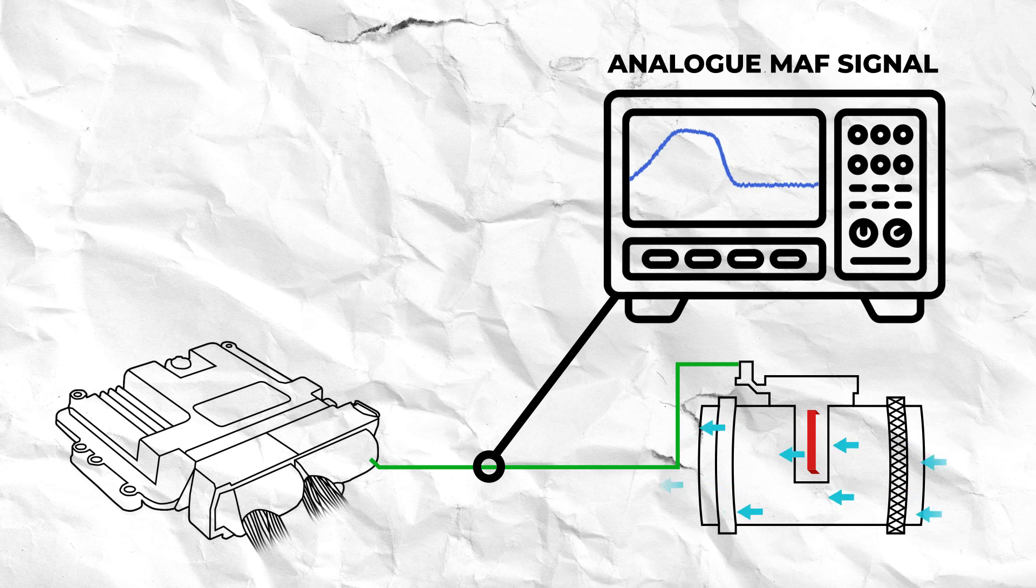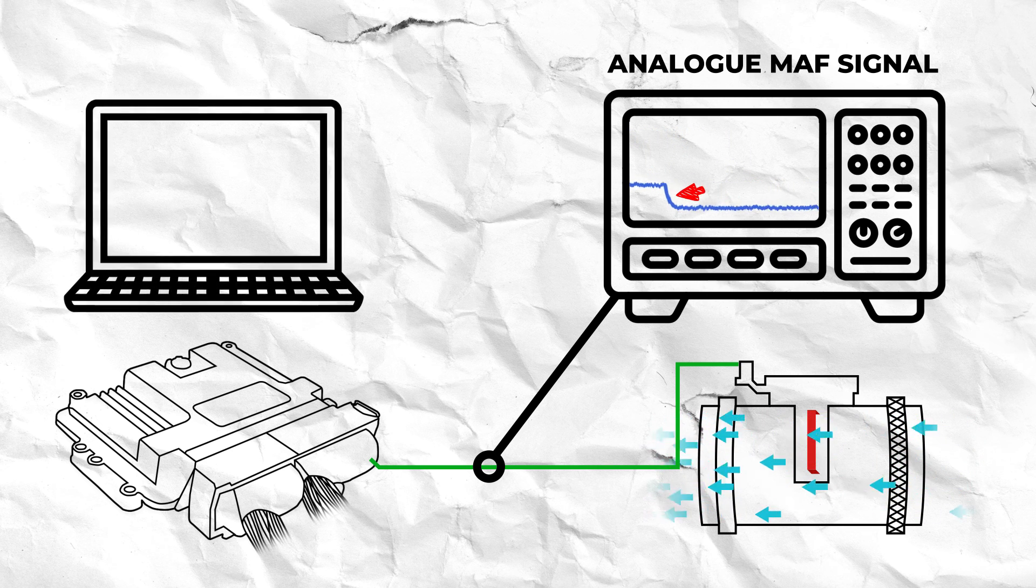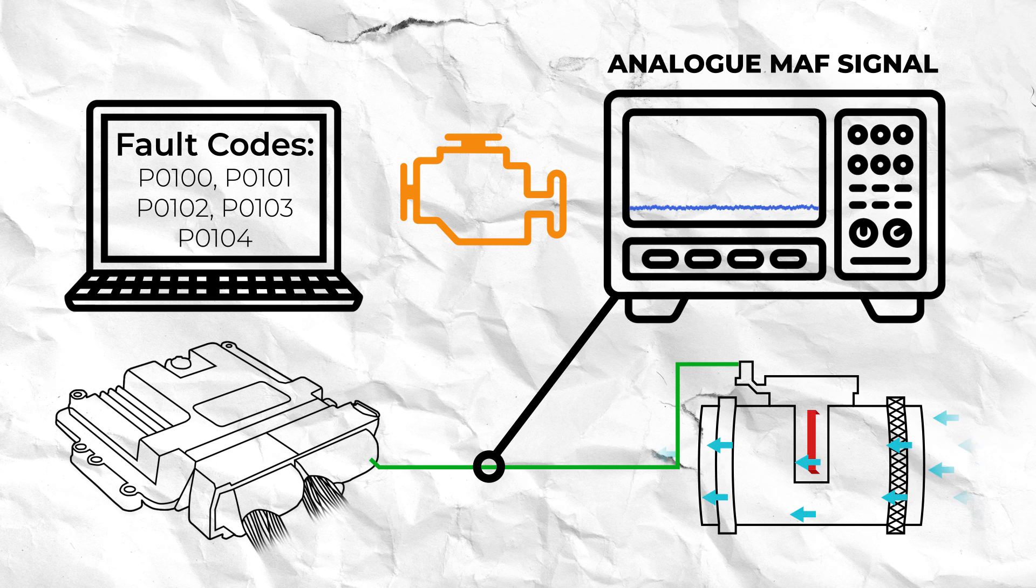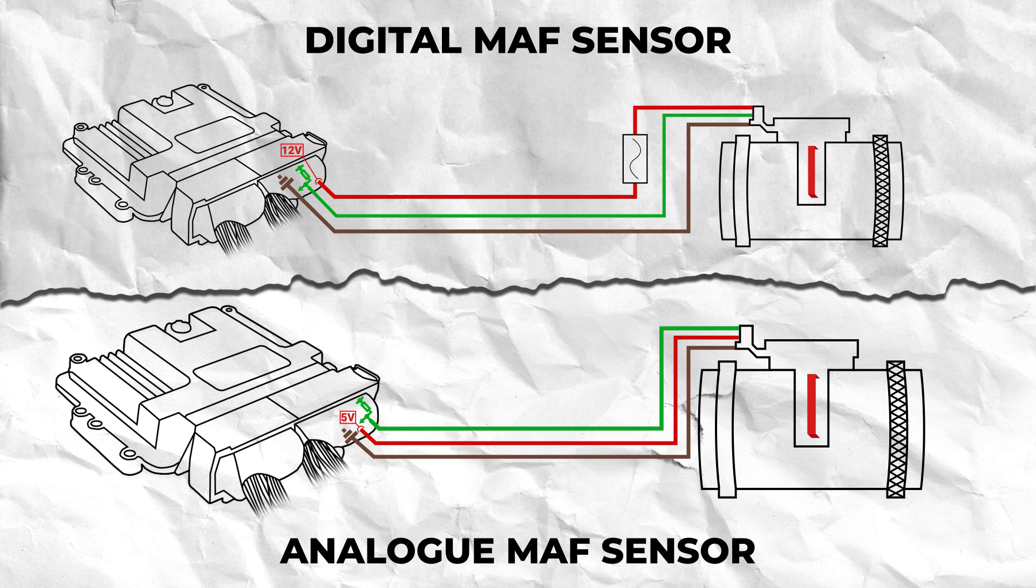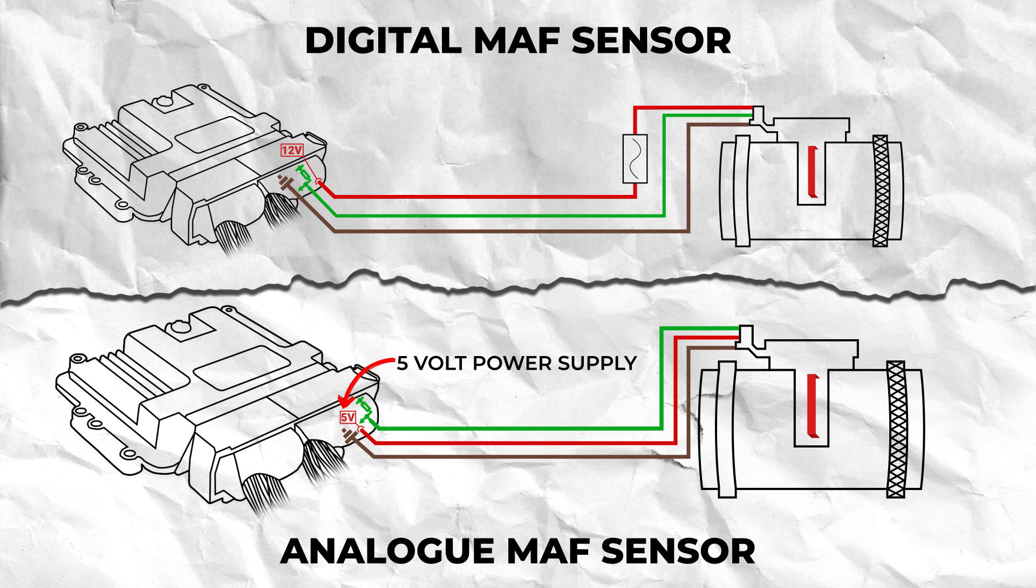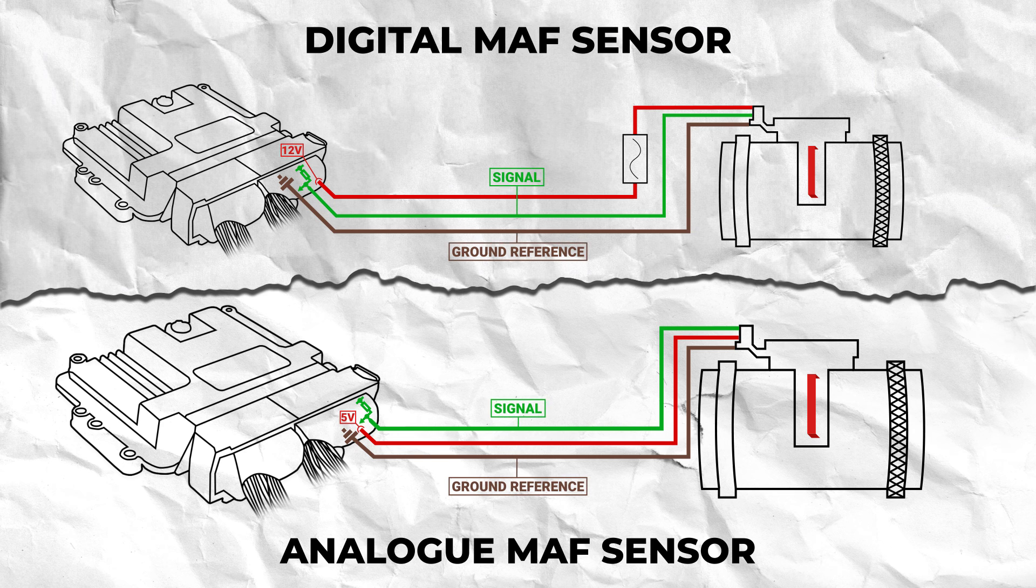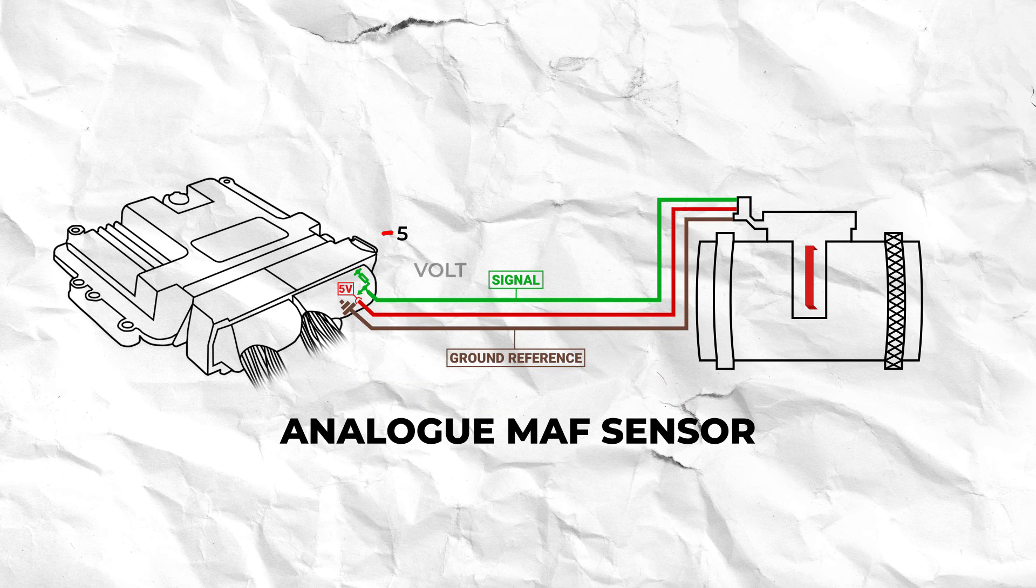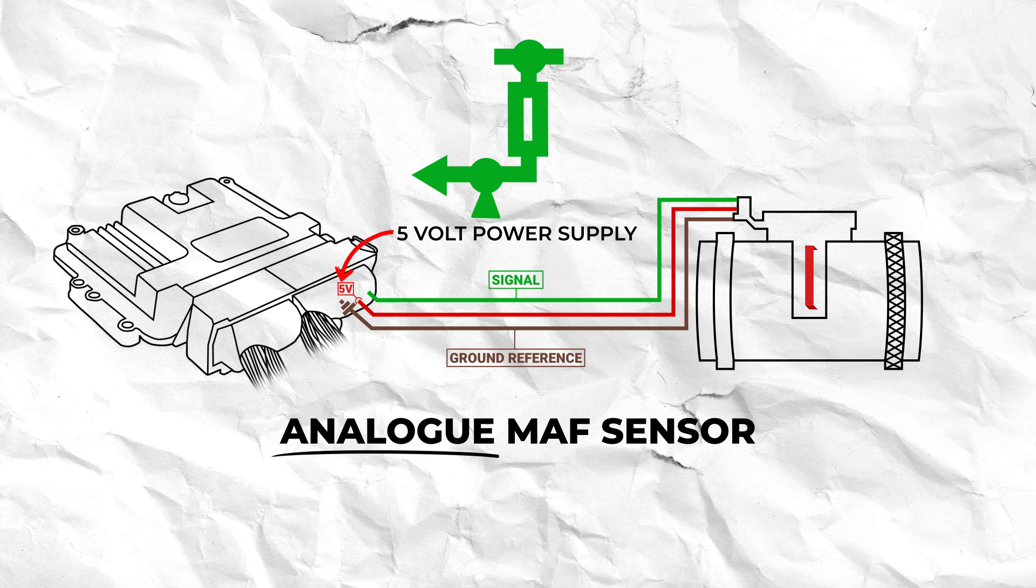When the signal from the MAF sensor is outside the ECU's set parameters for a certain amount of time, a fault code is produced and the check engine light will appear. Digital and analogue sensors are set up in different ways, with the general rule being analogue sensors have a 5 volt high reference supply and digital sensors have a 12 volt supply which is fused. Both will also contain a low reference or ground and a signal wire. In this video we will be looking at 5 volt supplied analogue MAF sensors, and these typically have a pull-up signal circuit.